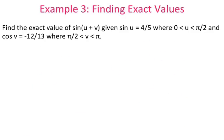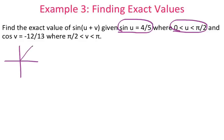The last thing we're looking at is finding exact values when I give you sine of u and cosine of v but don't tell you what the angles are. For this it's very helpful to draw some triangles. Sine of u is 4/5 with u between 0 and pi over 2, which is the first quadrant. So I'll draw my triangle in the first quadrant — sine is opposite over hypotenuse, so my opposite side is 4 and hypotenuse is 5. Using the Pythagorean theorem, the third side ends up being 3.